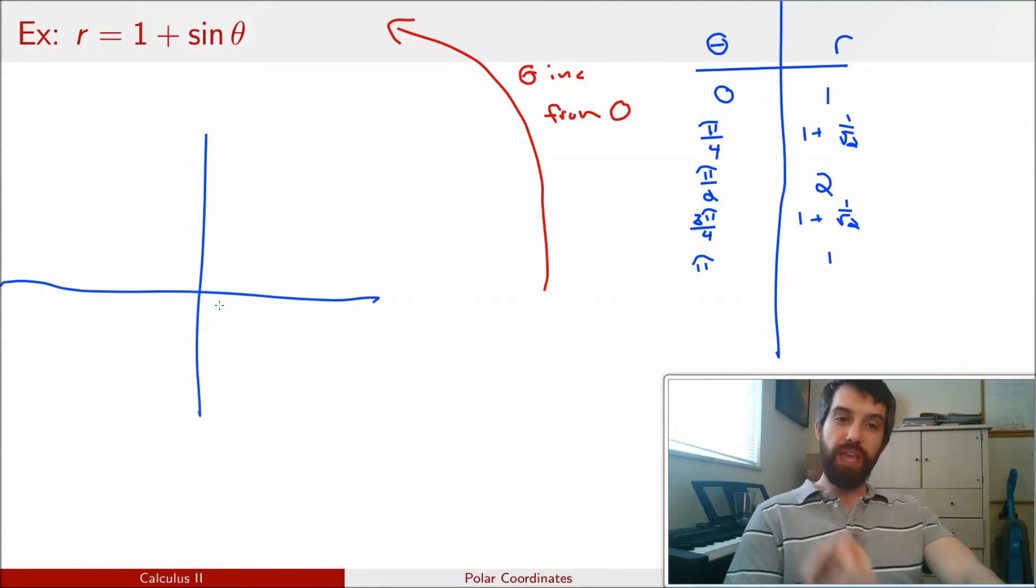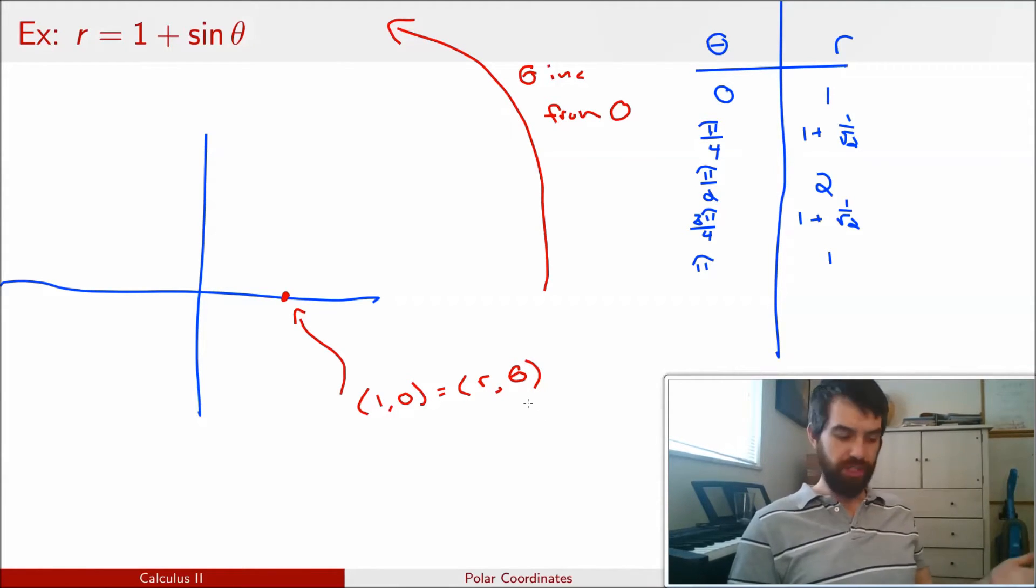So if I plug in theta equal to 0, I'm beginning down on the x-axis and it tells me that its value is the value of 1. So the coordinates of this point in polar are going to be expressed as 1, 0, which, in other words, is an r value of 1 and a theta value of 0. Incidentally, it's also 1, 0 in Cartesian, but that's just a coincidence, as we'll see in a moment.